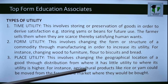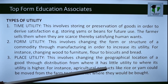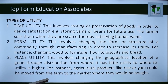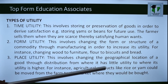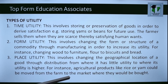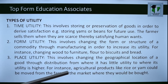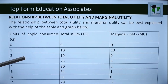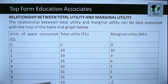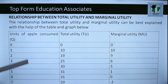Place utility involves changing the geographical location of a good through distribution — from where it has little utility to where its utility is higher. For instance, agricultural products like rice or yam could be moved from the farm to the market where they will be bought. That is place utility.